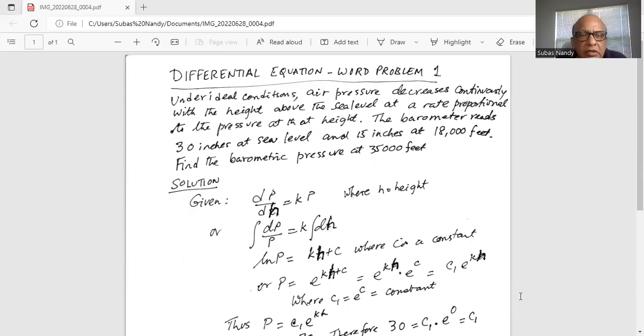Differential equation word problem number one. Under ideal conditions, air pressure decreases continuously with the height above the sea level at a rate proportional to the pressure at that height. The barometer reads 30 inches at sea level and 15 inches at 18,000 feet. Find the barometric pressure at 35,000 feet.